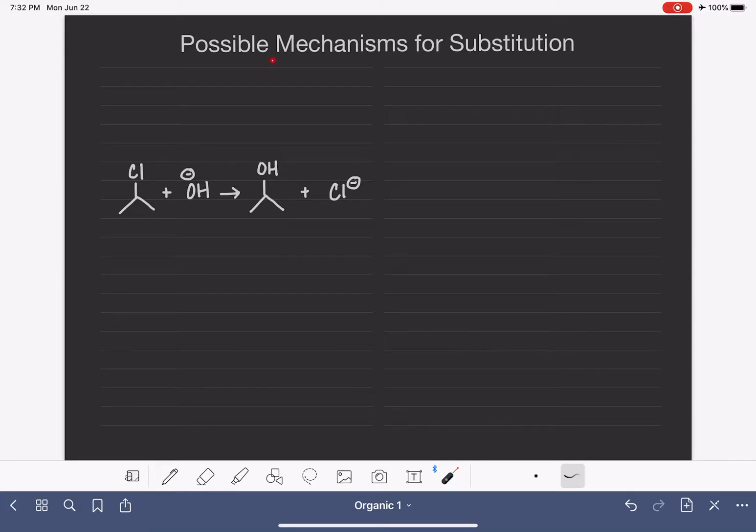These ways are called mechanisms. Let's start by defining what a mechanism is. A mechanism is referring to the exact series of steps of a chemical reaction.